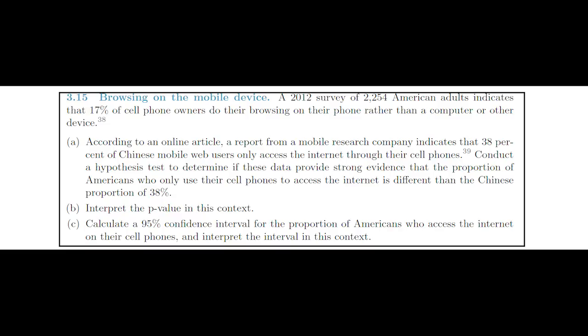In this video we're discussing question 3.15 from the prescribed textbook. The question says: A 2012 survey of 2,254 American adults indicates that 17% of cell phone owners do their browsing on their phone rather than a computer or other device. Question A says: According to an online article, a report from a mobile research company indicates that 38% of Chinese mobile web users only access the internet through their cell phones. Conduct a hypothesis test to determine if these data provide strong evidence that the proportion of Americans who only use their cell phones to access the internet is different than that of the Chinese proportion of 38%.